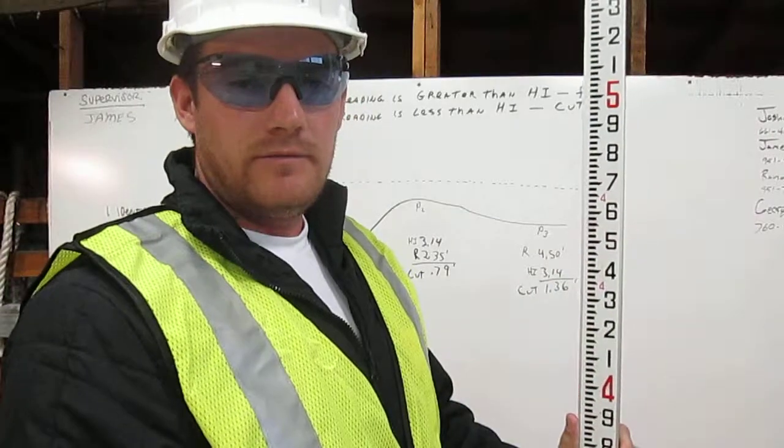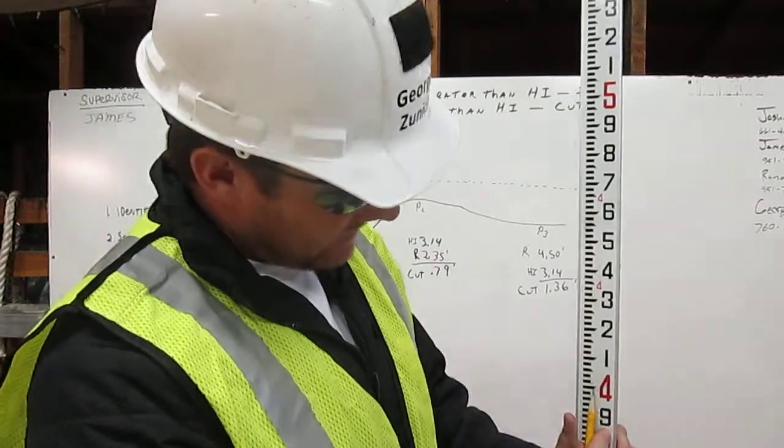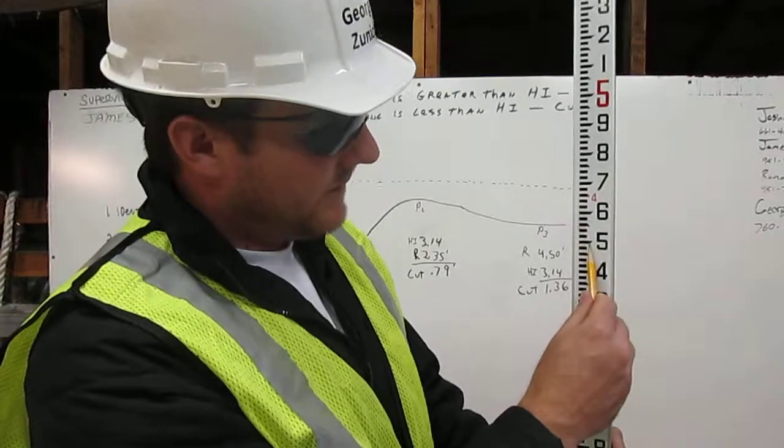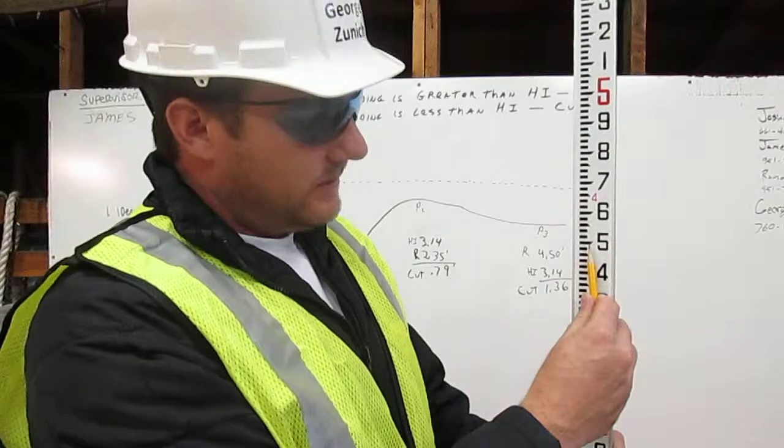To find 4.57 feet on an engineer's ruler, first go to four feet, then go up to five—the five represents 50—then go up to seven.